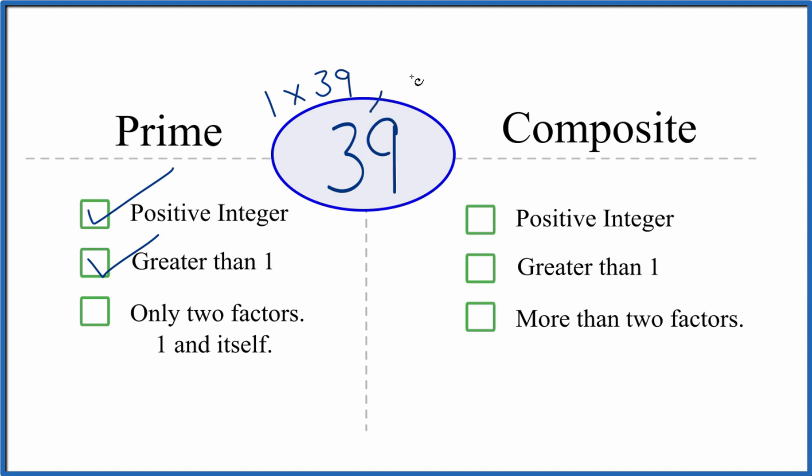It turns out that 3 times 13, that gives us 39. So there are more than two factors. So 39 is not a prime number.